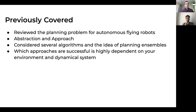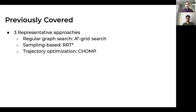Basti's presentation covered the path planning problem for autonomous flying robots — the problem itself, the abstractions we can choose, and different approaches. He talked about several algorithms, the idea of using multiple launches and ensembles, and how depending on the environment, different planners may work better than others. Specifically, he covered A*, grid search, RRT*, and a little about CHOMP.